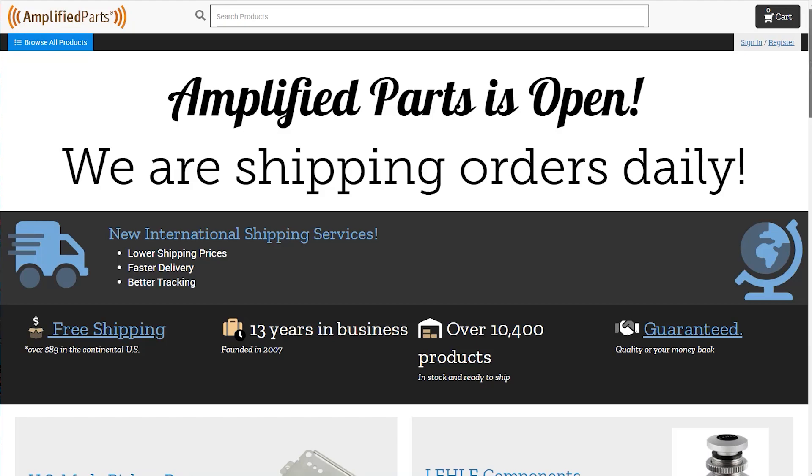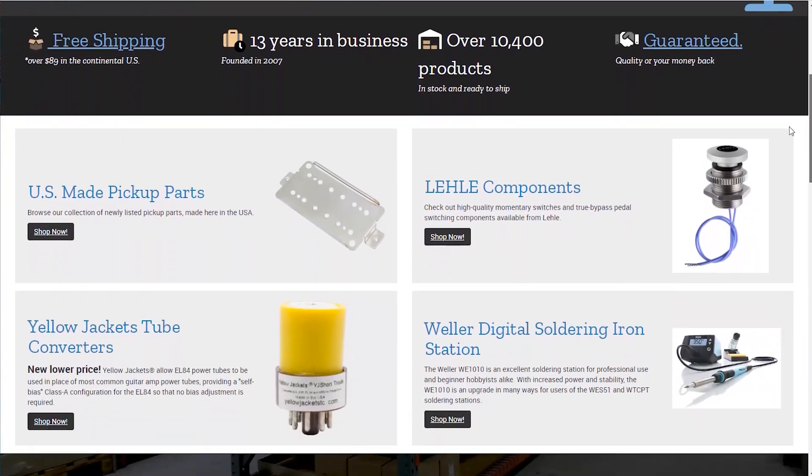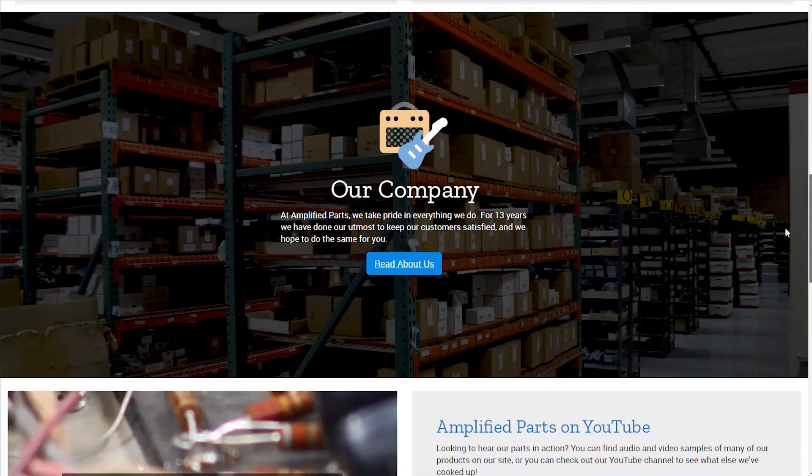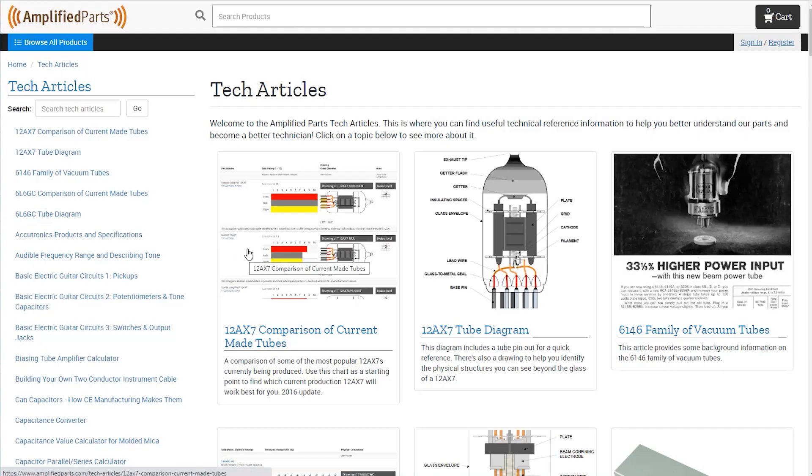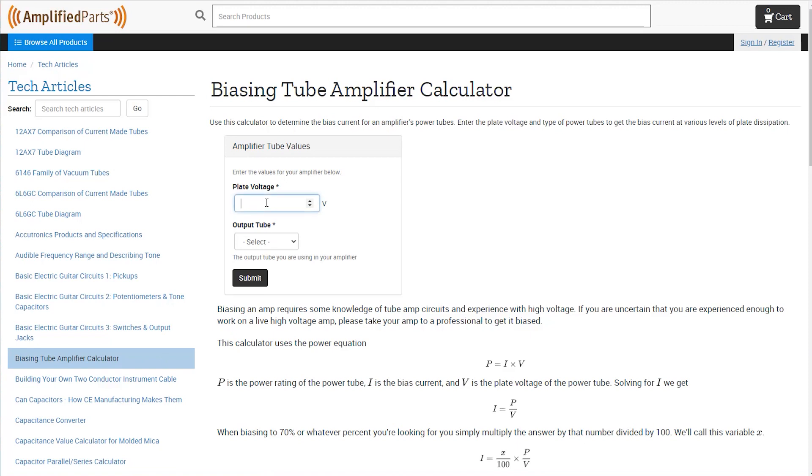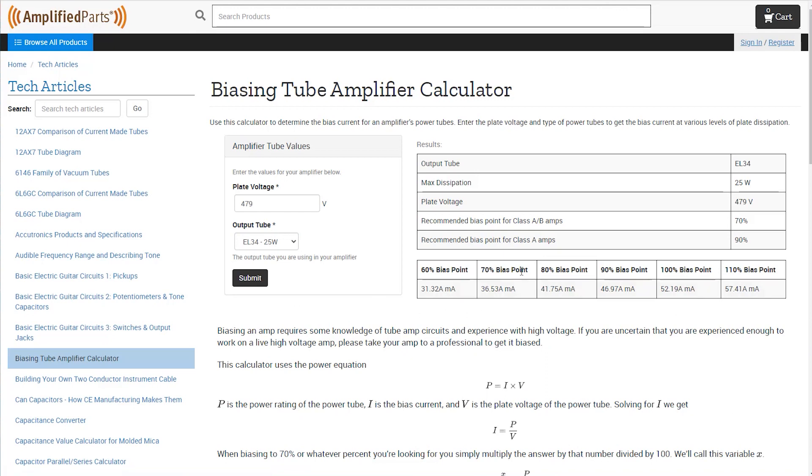Now head to AmplifiedParts.com and scroll to locate the tech articles. From there, select Biasing Tube Amplifier Calculator and input your plate voltage and select the output tubes you are using. This will provide you with various bias points. We are going with 70% bias point as that is typically considered standard.